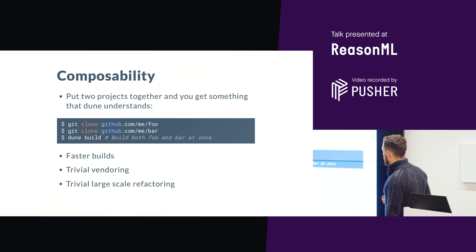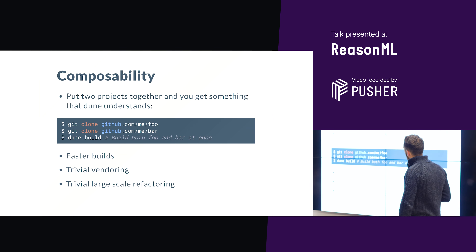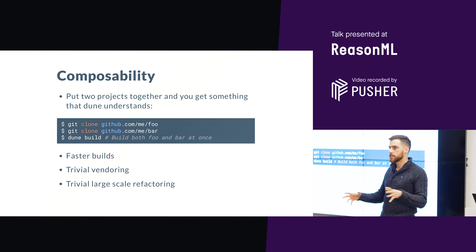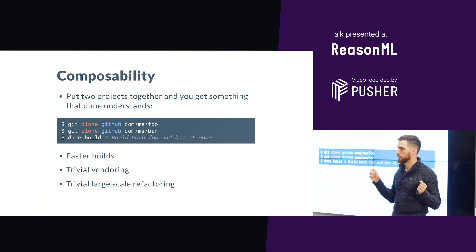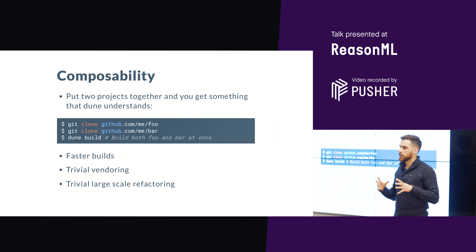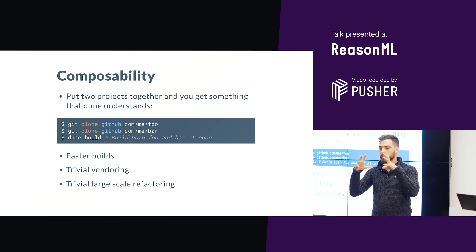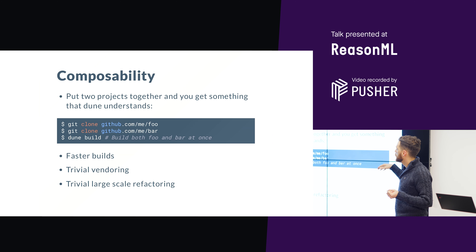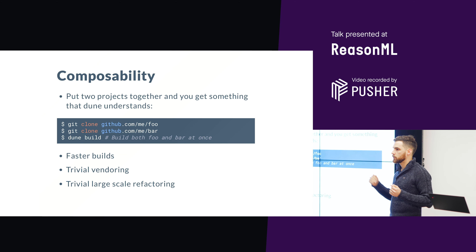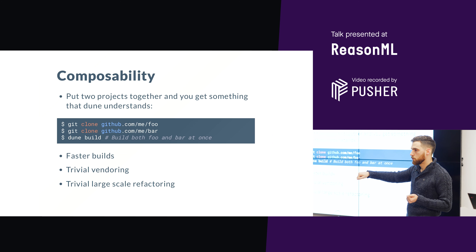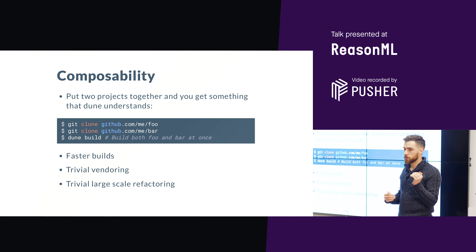Something important is the composability aspect. You can just take any two Dune projects, put them together, and Dune will see them as just one single thing. It's not that it builds the first one and then the second one — it's exactly as if you developed a single project right from the start. This came from maintaining open source software with many dependencies and features crossing all projects.